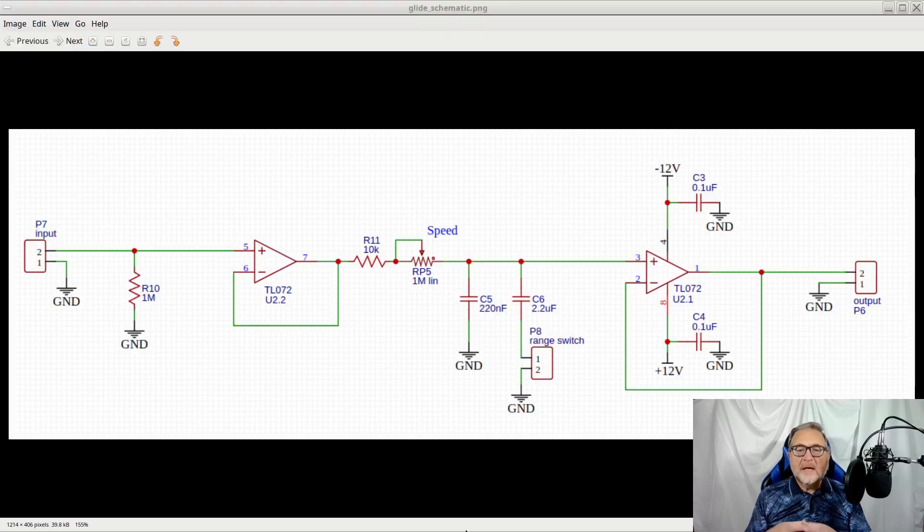The core of the glide circuit is made of the resistors R11 and RP5, and capacitors C5 and C6 that can be included and excluded through the range switch P8.